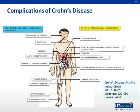Extra-intestinal complications, as illustrated in the following picture, can be divided into those occurring during the active phase — such as erythema nodosum, pyoderma gangrenosum, episcleritis and uveitis, and arthropathy — and those unrelated to inflammatory bowel disease activity, such as sclerosing cholangitis, ankylosing spondylitis, and osteoporosis.